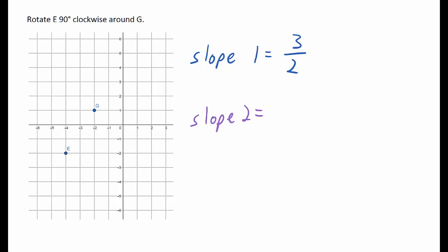We find the opposite reciprocal to find the slope from G to E prime. So that will be negative 2 over 3. Now if we go down 2 over 3 from G, that point would be counterclockwise from E. So we need to reverse the slope and go the other direction. Instead of going down 2 right 3, we will go up 2 left 3 from G.